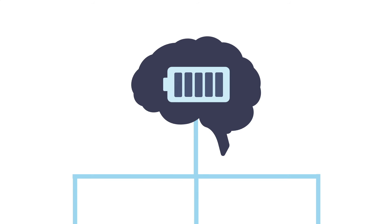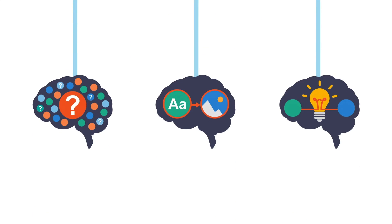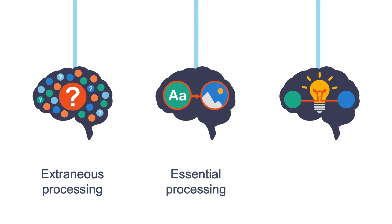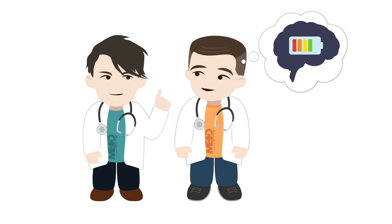Now that you understand that cognitive load is determined by three types of energy-consuming processes — extraneous processing, essential processing, and generative processing — it's your job as a teacher to help your learners consume as little processing power as possible to understand your message.